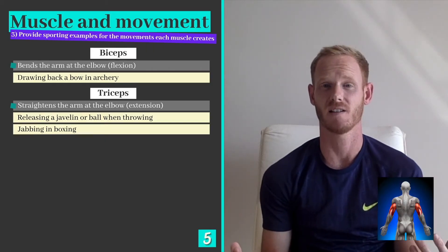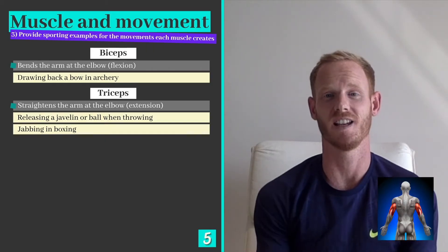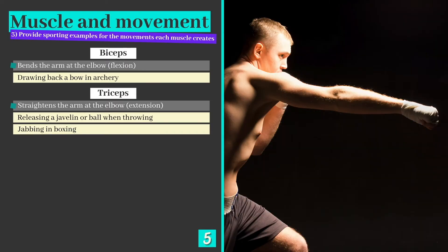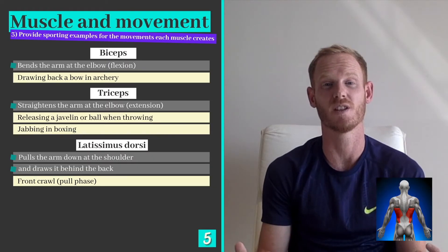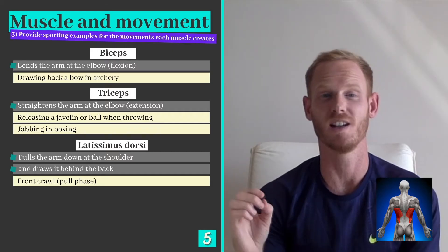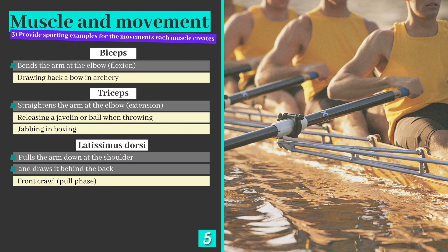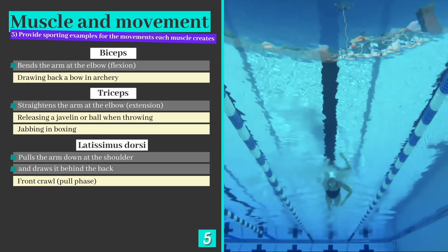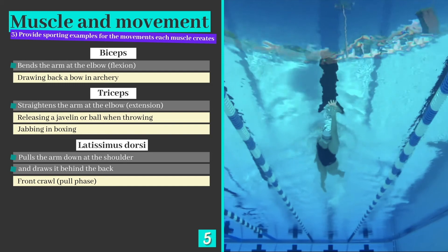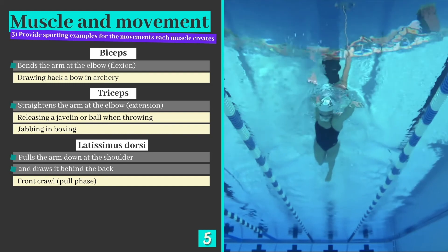The triceps have the opposite effect — they straighten the arm at the elbow when they contract, and therefore play a key role when throwing a shot put or javelin and jabbing in boxing. The latissimus dorsi pulls the arm downwards and backwards at the shoulder joint, so we're mostly looking at examples that involve pulling movements such as rowing. The latissimus dorsi creates extension at the shoulder of the swimmer as they pull their arm and propel themselves through the water.